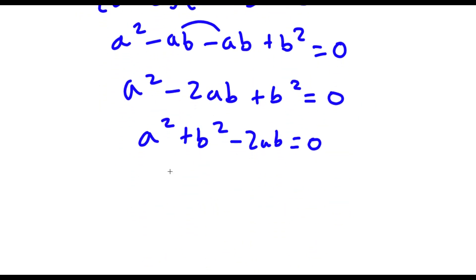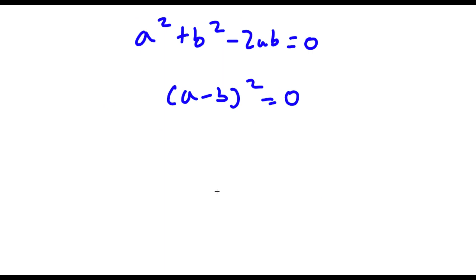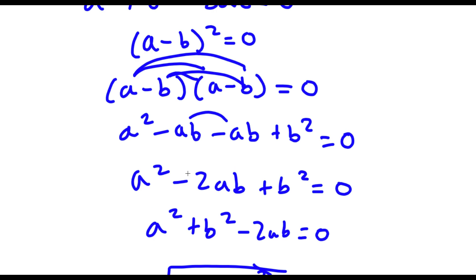So now I'm going to change this back to a minus b squared is equal to 0. I'm going to take the square root on both sides. The square root of a minus b squared — these cancel out — and I'm left with a minus b is equal to the square root of 0, which is simply 0. And now we've found our value of a minus b: it's 0.